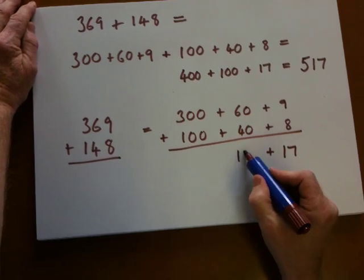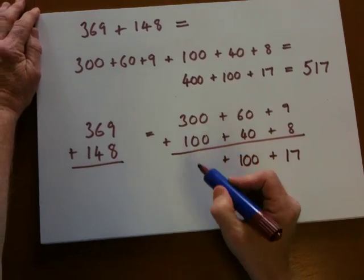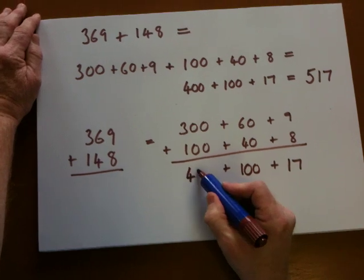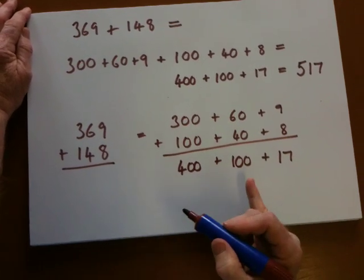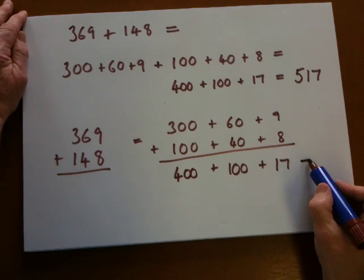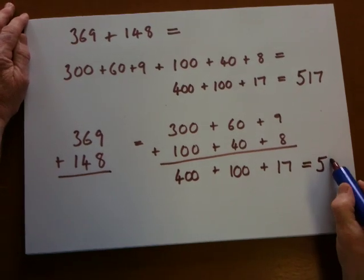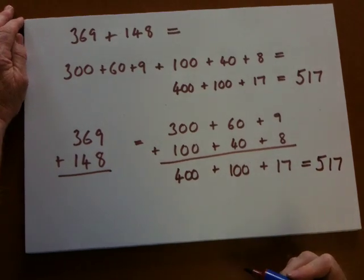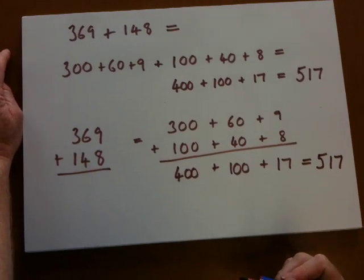60 add 40 is 100, 300 add 100 is 400. So once again, 400 add 100 add 17 is 517. That's a method known as partitioning.